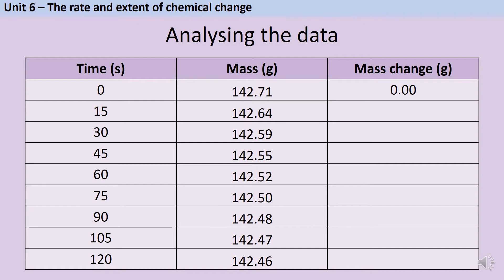At 15 seconds, the mass change is 0.07. That's how much the mass has gone down since the first reading. Each time, I'm looking back at the first reading, not the reading directly above. So my mass change for 30 seconds is 0.12. It's not 0.05.